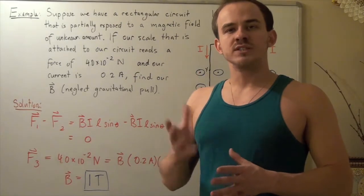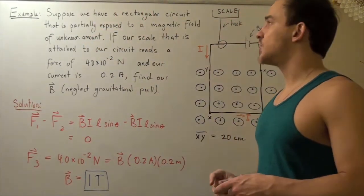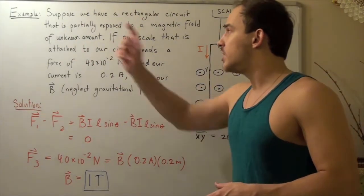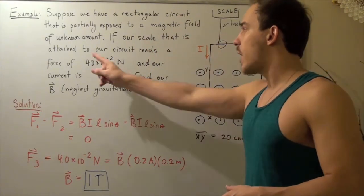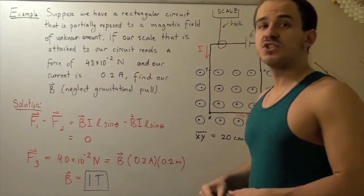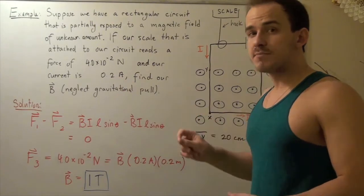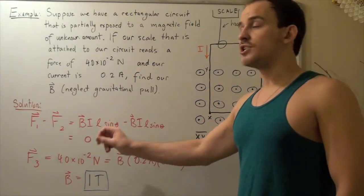In this example, we're going to conduct the following experiment. Suppose we have a rectangular circuit that is partially exposed to a magnetic field of an unknown amount. If our scale that is attached to our circuit reads a force of 4.0 times 10 to negative two newtons, and our current within our circuit is 0.2 amps, what is our magnetic field? Neglect the gravitational pull.